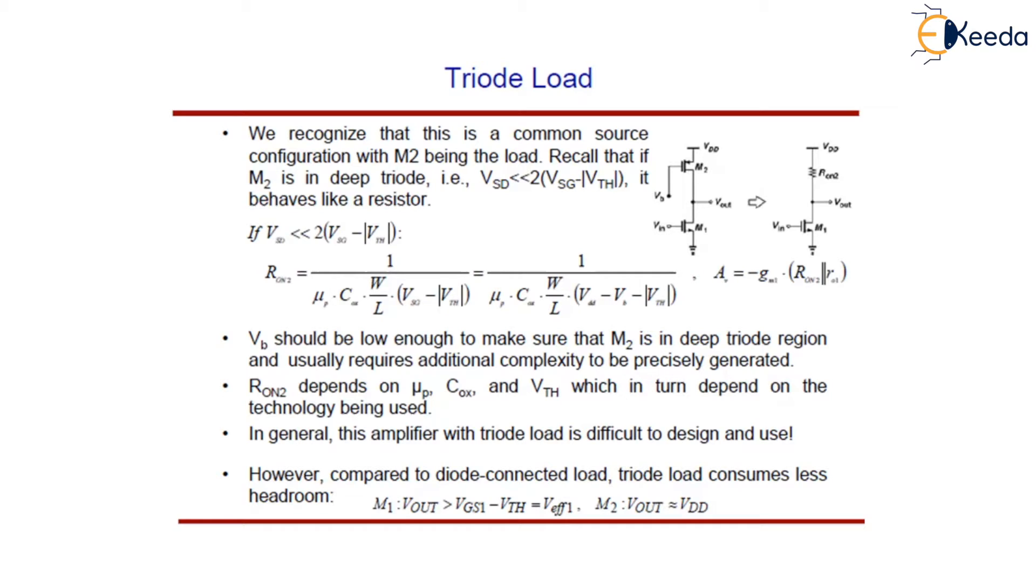And the principal drawback of this circuit stems from the dependence of this Ron2 upon μP, tox and VTH, which in turn depends upon the technology being used while fabricating the device.